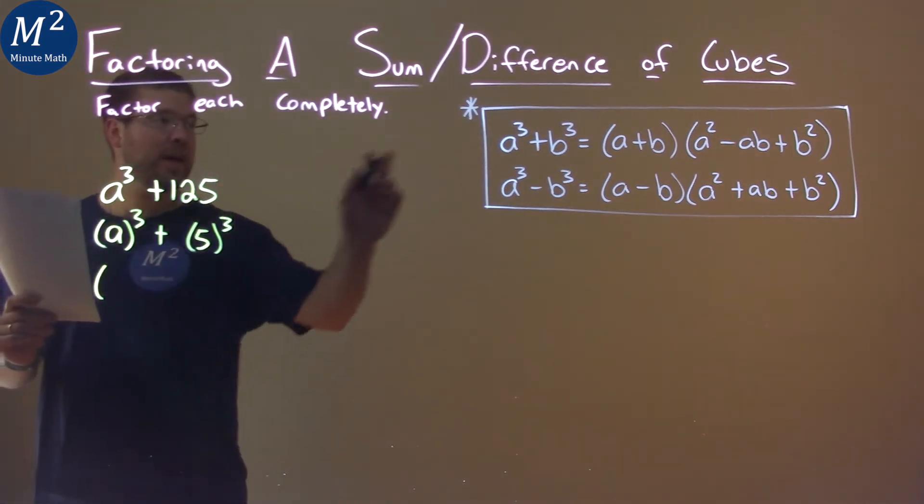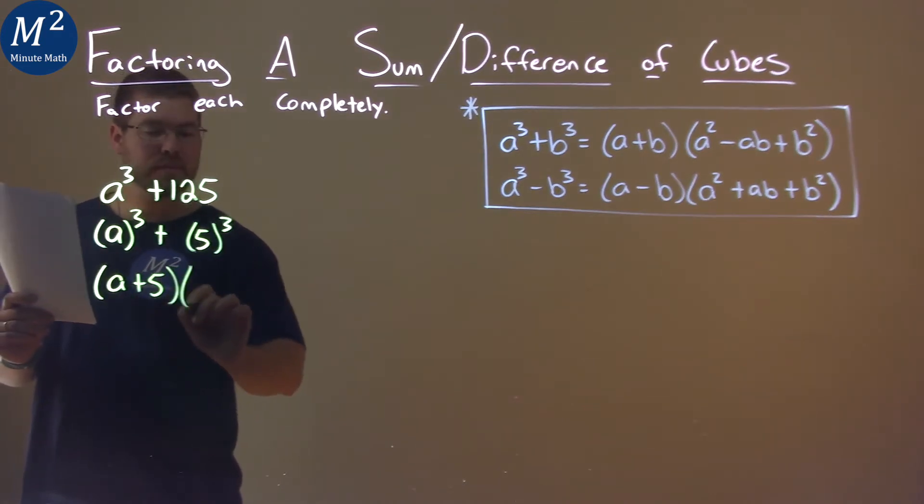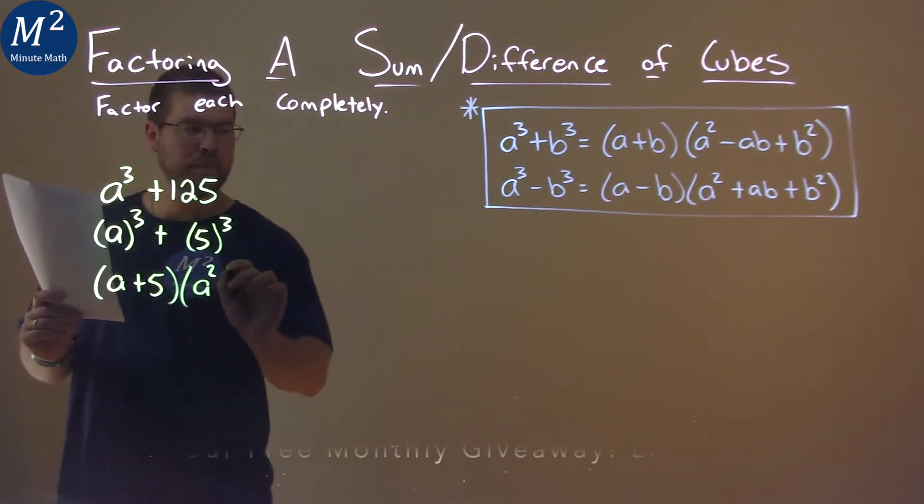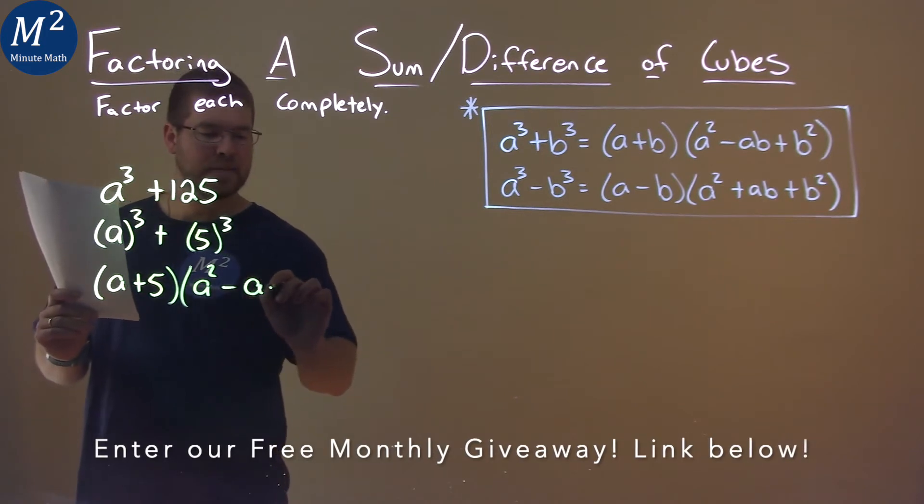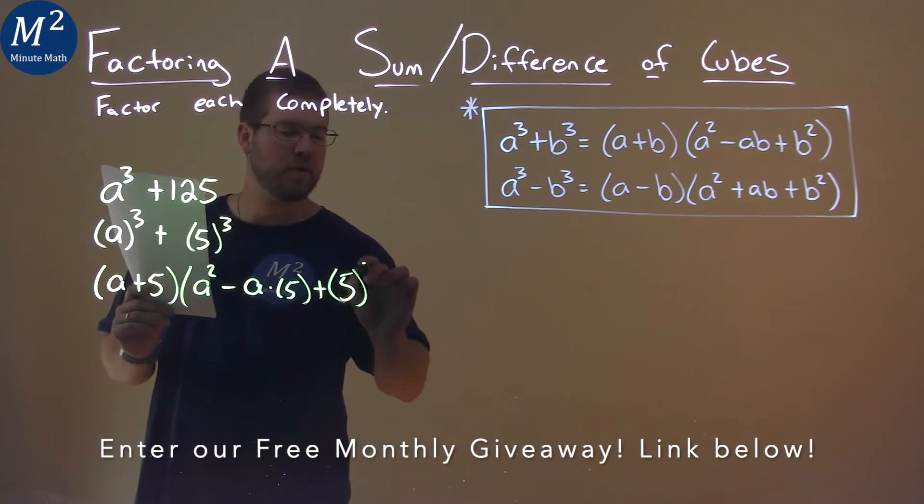Our a value is a and our b value is 5. We have a plus 5 times a squared minus a times 5 plus our b value again is 5 and we square that.